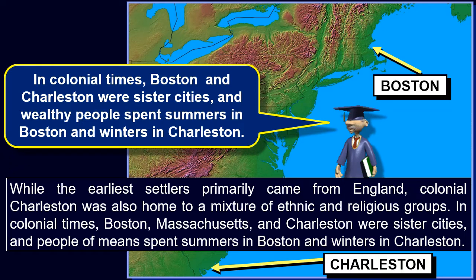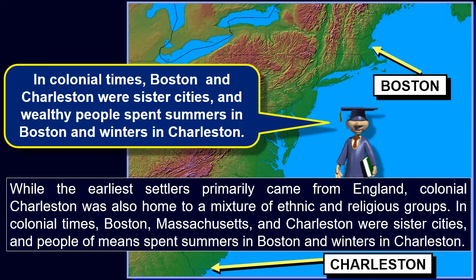French, Scottish, Irish, and Germans migrated to the developing seacoast town, representing numerous Protestant denominations, as well as Roman Catholicism and Judaism.